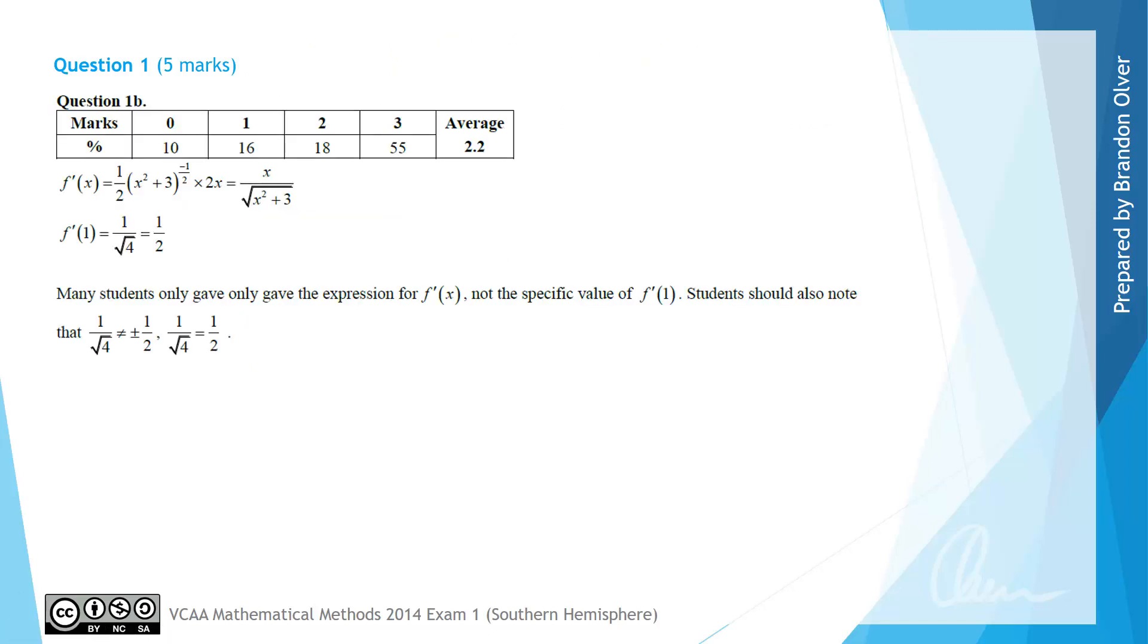From the examiner's report we can see that 55% of students got full marks for this question, with most other students making some progress along the way. Many students only gave the expression for the derivative f dashed of x however, rather than the specific value of f dashed of 1, which is what was asked for. Students should also note that the fraction 1 divided by the square root of 4 does not equal plus or minus a half, it simply equals a half.